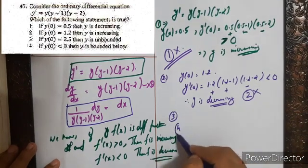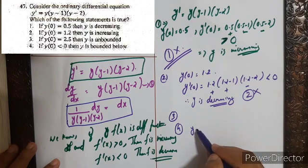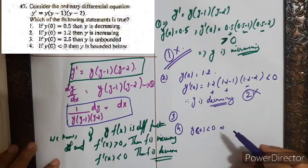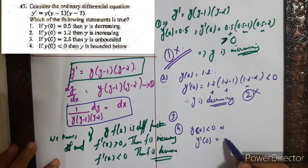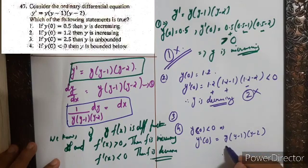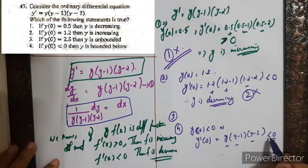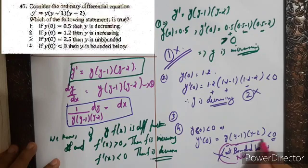For the fourth option, if y(0) < 0, then y'(0) = y(y-1)(y-2) where y < 0. So we have a negative quantity times a negative times a negative, which is less than 0. That means y is a decreasing function at 0, so it may not be bounded below — in fact, it is not bounded below. So option 4 is false.